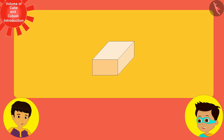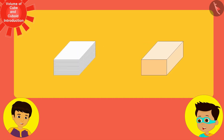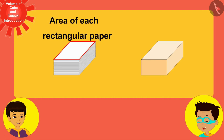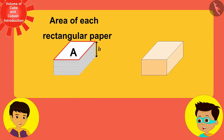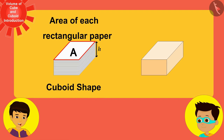Let's look at these rectangular paper packets first. Suppose the area of each rectangular paper is A, and the height to which the stack of rectangular papers is stacked is h. Can you tell me what shape these rectangular paper stacks are? It is a cuboid shape.